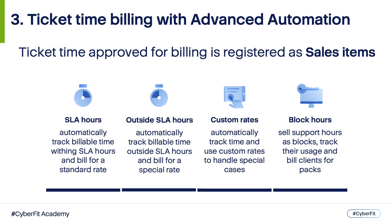Ticket time billing is the third and last part of this video training. As an MSP you'll have to deal with billable and non-billable ticket time. Ticket time billing rules can be defined at the SLA level in Advanced Automation. We can have fixed price SLAs — in this case ticket time won't be charged on top of a contract — and we can have SLAs with subsequent time calculation, where your client will be charged depending on time spent on the ticket work and the applicable hourly rate. Ticket time approved for billing is registered as sales items in Advanced Automation.